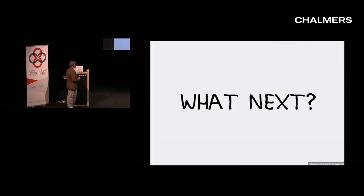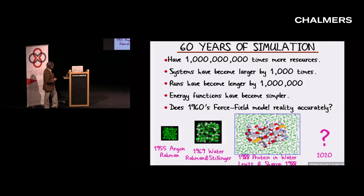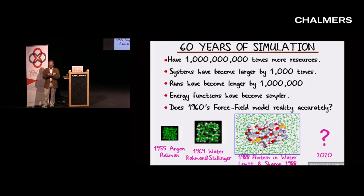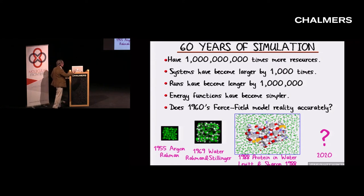Now let me just say a few words about what's next. If we look at simulation — going back to the molecular dynamics work done by Raman on liquid argon, through water, through proteins in vacuum, through proteins in water — we've got something like a thousand million times more resources. Computers are about a thousand million times faster per unit dollar. The systems have got bigger — we're not looking at 64 argon atoms, we're looking at ribosomes, bigger by something like a factor of a thousand.